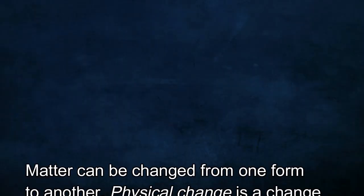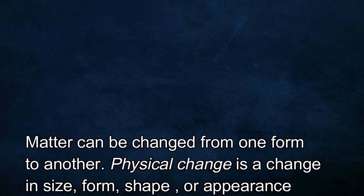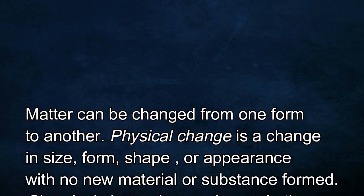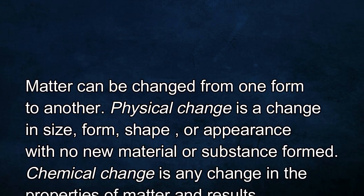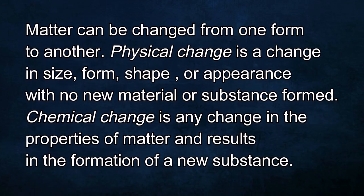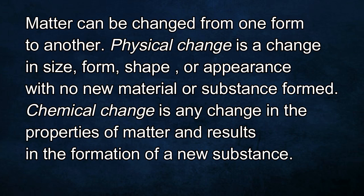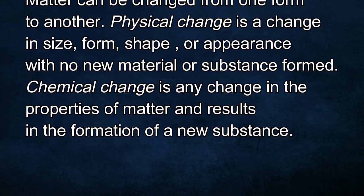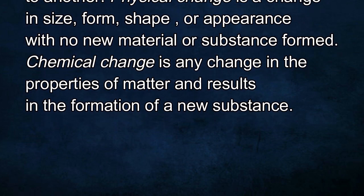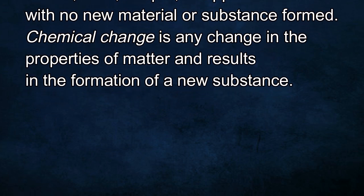Matter can be changed from one form to another. Physical change is a change in size, form, shape, or appearance with no new material or substance formed. Chemical change is any change in the properties of matter that results in the formation of a new substance.